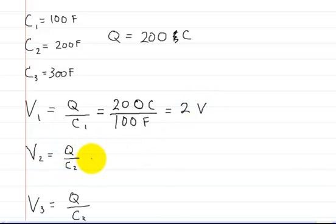For V2, the charge is 200 coulombs divided by C2, which is 200 farads, giving a voltage of 1 volt.